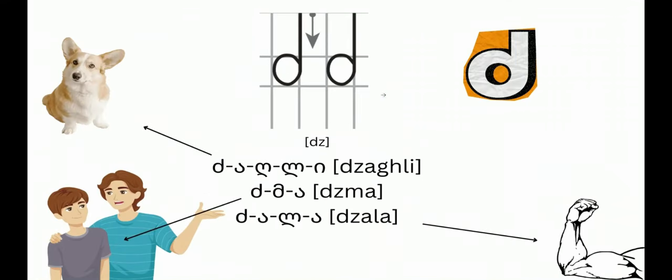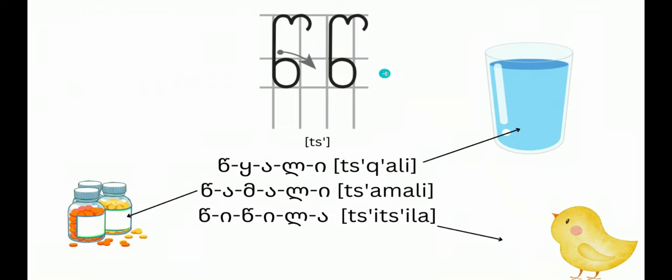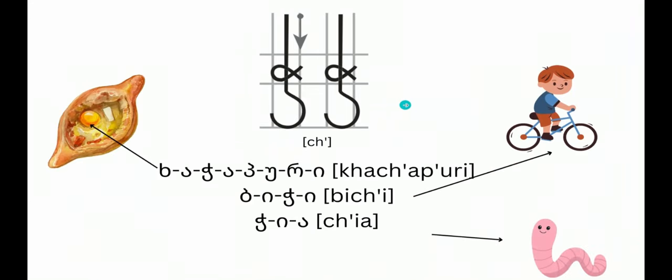Dz looks like English D. Dz - dzagli, dzma, dzala. Ts - tshali, tsamali, tsitsila. Ch - khachapuri, kaji, chia.